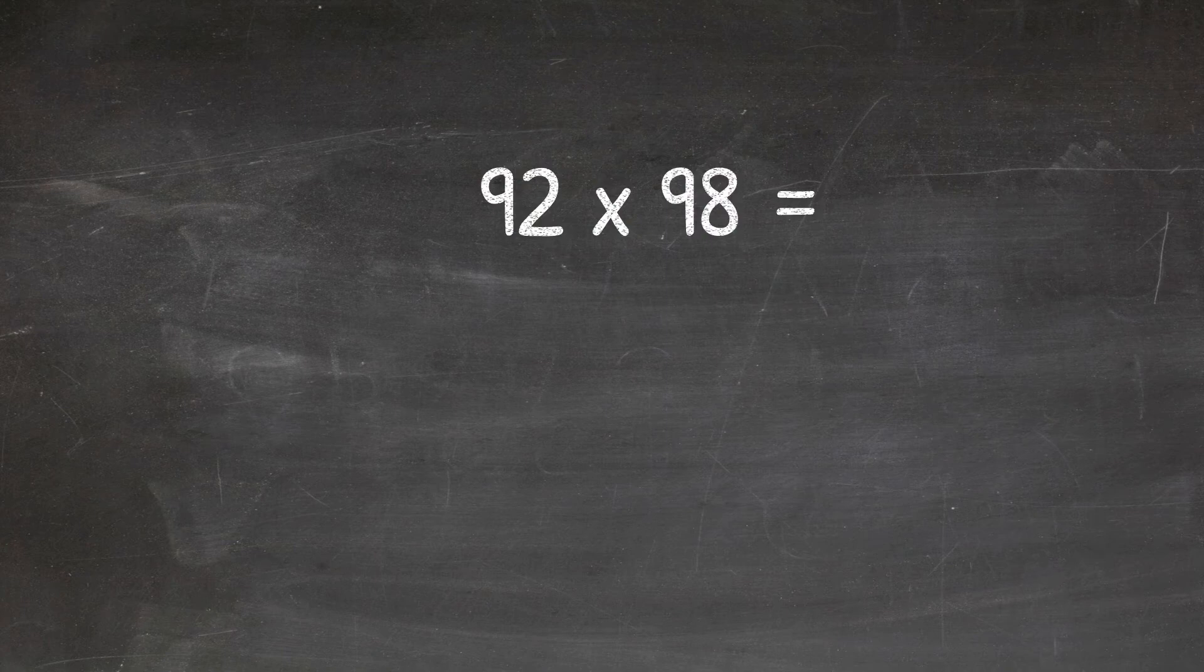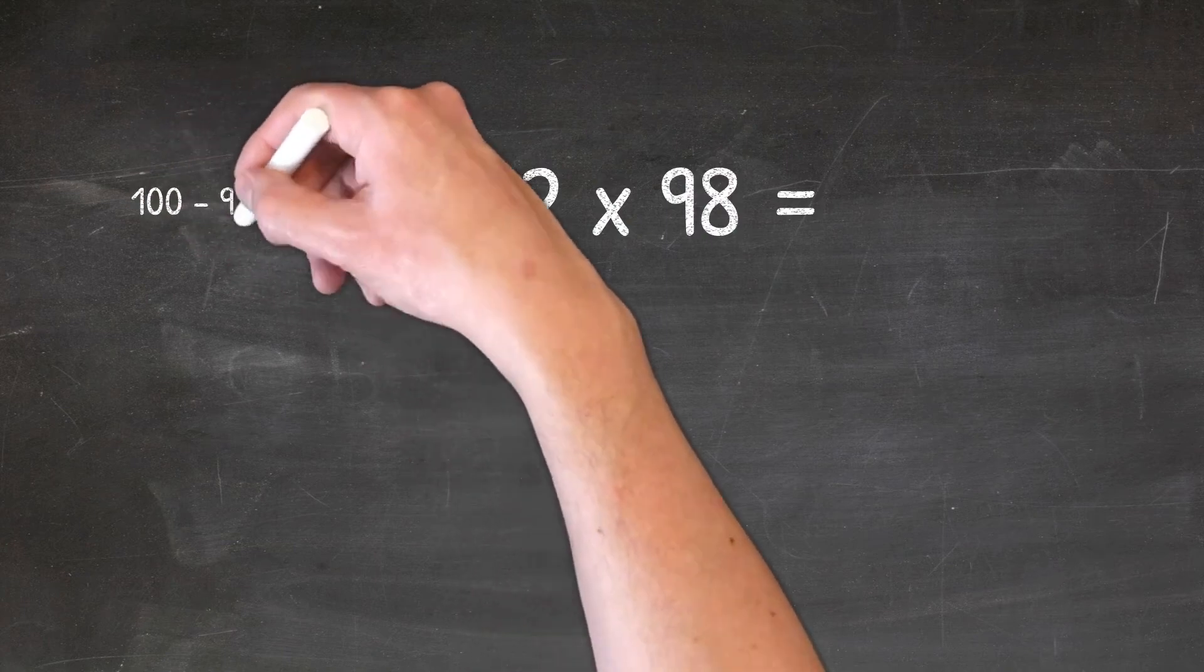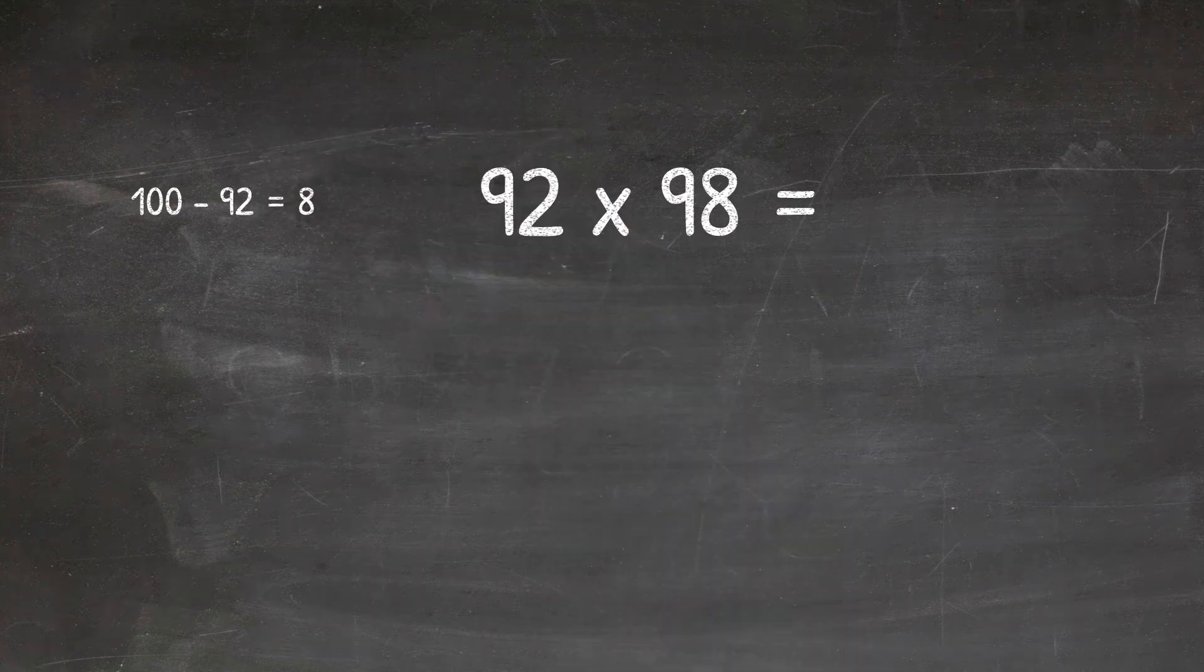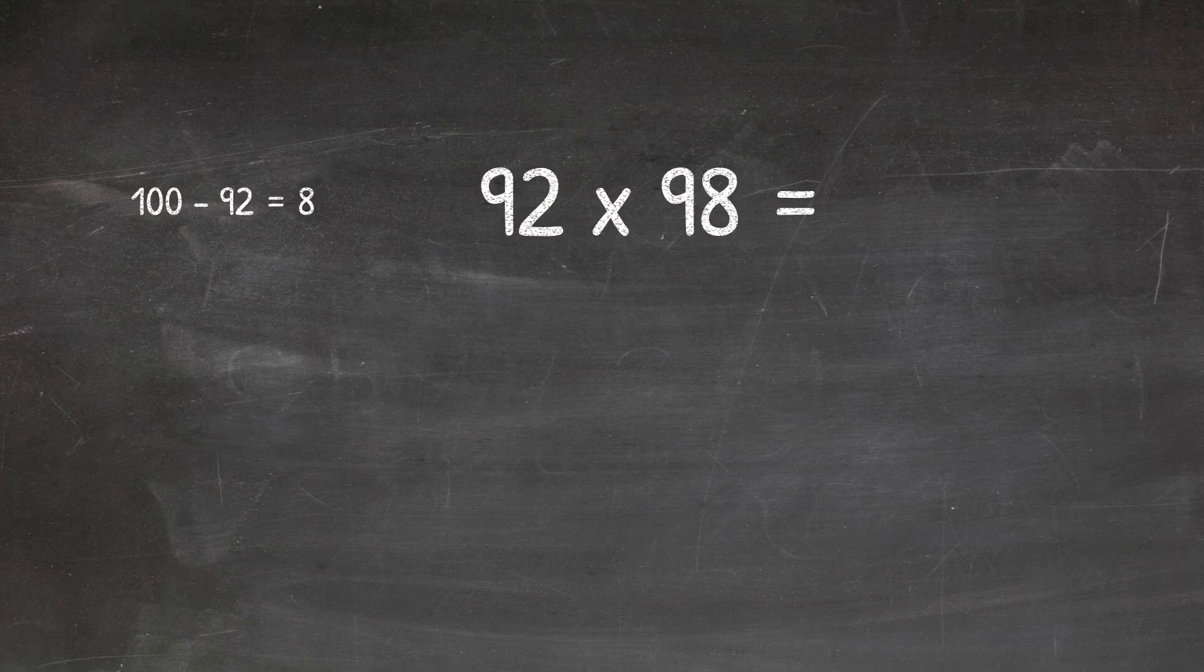The first thing we're going to do is take our 92 and minus that from 100. So it gives us the value of 8. Now whatever we decide our first number to be, it will always be taken away from 100.